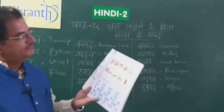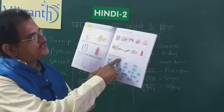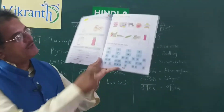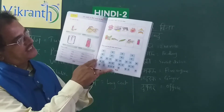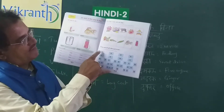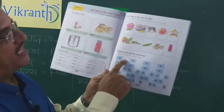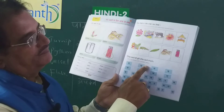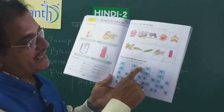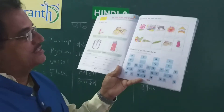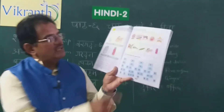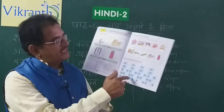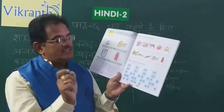In the same way, look at this: Rikta Sthanon Ki Purti Uchit Aksharonse Karo — fill in the blanks with suitable letters. There are some boxes here; in the blue boxes you can see letters. Immediately after that letter, what letter comes? For example, after Jha — Jha, Jha, Jha — what comes after? If you remember the Varna Mala, you can easily write these exercises. So, immediately after that letter, what letter comes — you have to write that letter. That is why it is called fill in the boxes with suitable letters.